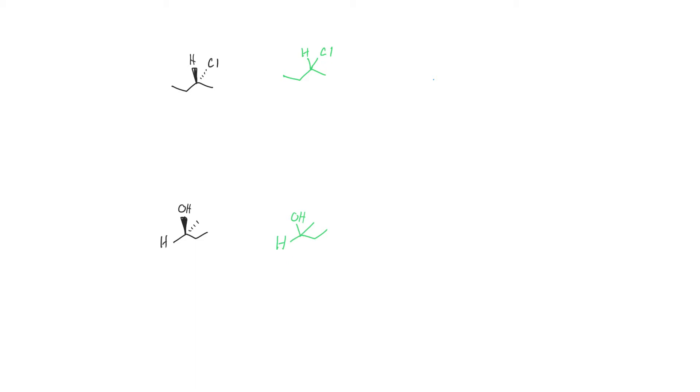We could also practice drawing the enantiomer of a chiral compound. If I want to draw the enantiomer, there are a couple ways I can do that. I can reverse the wedge and the dash. So the chlorine goes on the wedge, hydrogen on the dash. Or I can draw the mirror image of the molecule. Let's just pretend there's a mirror right here.